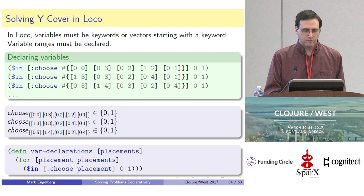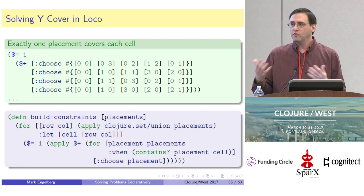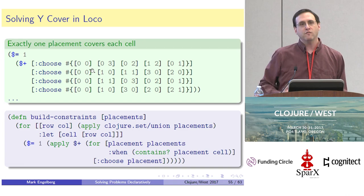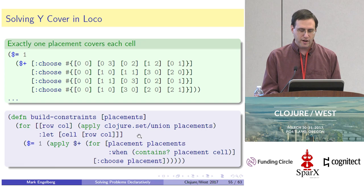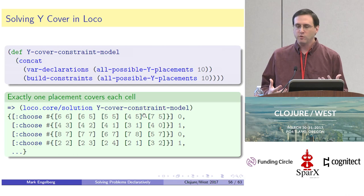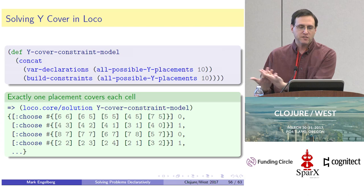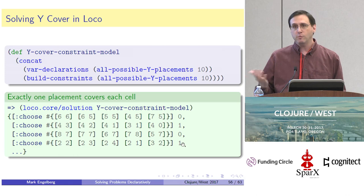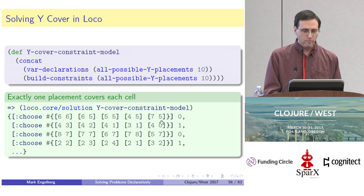Here is the code that generates all those variable declarations. We do the same kind of thing we did with Rolling Stones to build those exactly-one constraints — they become constraints saying these variables have to add up to exactly one. The example shows the four placements that cover the zero-zero cell in the upper left corner. We put together the variable declarations with all those exactly-one constraints to form our model, then pass that declarative model to Loco's solution function. It returns a mapping from all variables to either zero or one — zero being false, one being true.